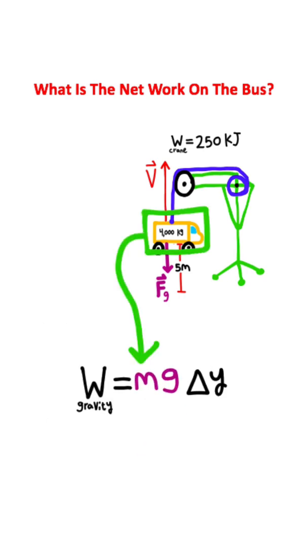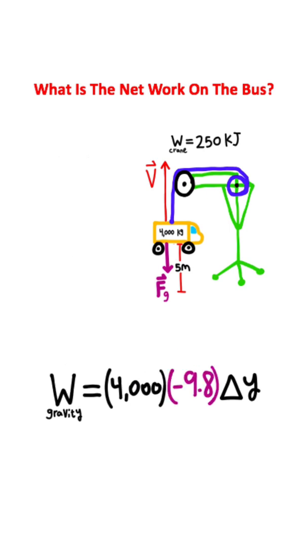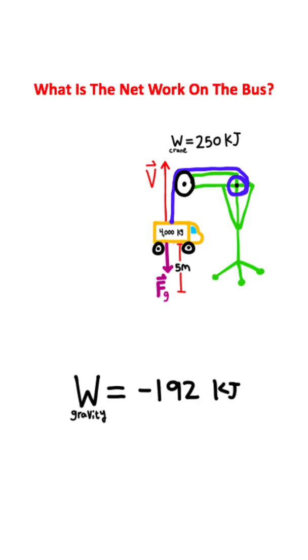Now the mass of the bus is 4000 kilograms. Gravitational acceleration on Earth is negative 9.8 meters per second squared. Vertical displacement is going to be this 5 meters, and now we have our equation. So 4000 times negative 9.8 times 5, that's going to give you negative 192,000 joules. You could also write this as negative 192 kilojoules.